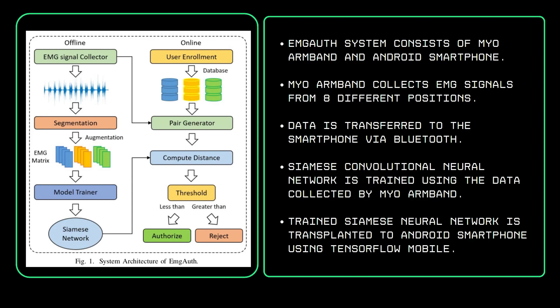The data collected by the Myo armband is used to train a Siamese convolutional neural network, which is then transplanted to an Android smartphone using TensorFlow Mobile. The figure shows the system architecture, with the left side showing the offline model training phase and the right side showing the online authentication phase.